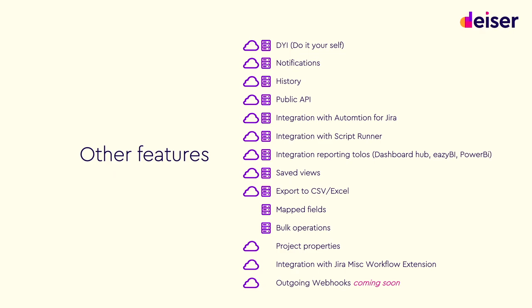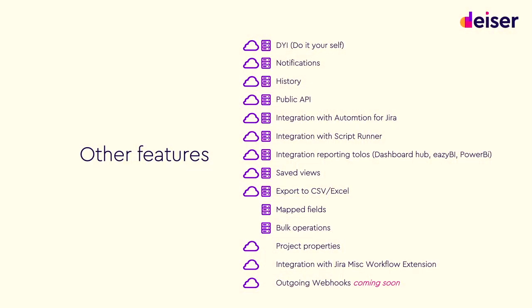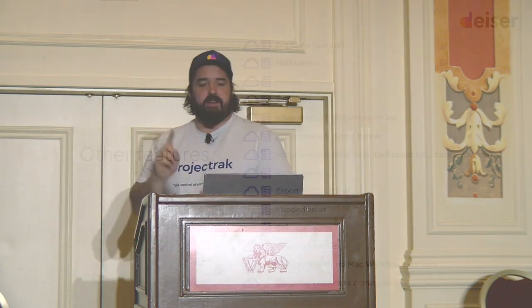There are Notifications and the DIY — Do It Yourself — layouts, where you can set up your layout as you please with all the information you need. Maybe a group of users needs the information laid out in a specific way — you'll be able to set that up. Then there's the History of changes made in Project Track, so you can see what's been going on in your project. We also have different integrations with Automation for Jira, Script Runner, and reporting tools like EazyBI, Dashboard Hub, and Power BI connectors.